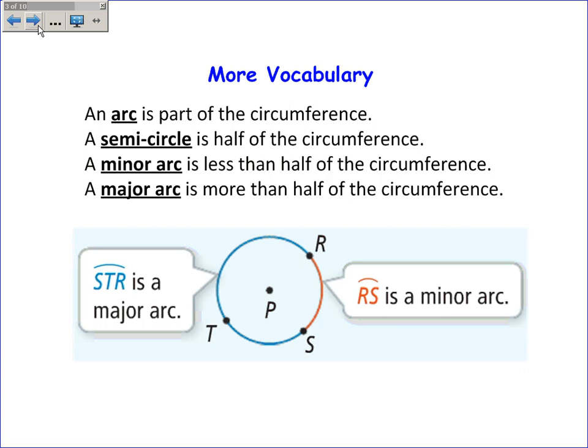So if we talked about arc RS, we're talking about this part right here. Now when we say arc RS, we want to clarify whether we mean this arc or the major arc. And although we could decide based on counterclockwise or clockwise, just to be super clear, we've decided that a minor arc we label with two letters.